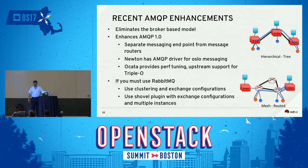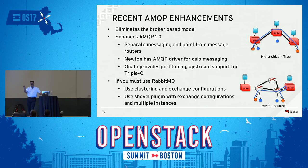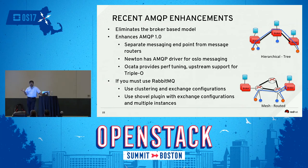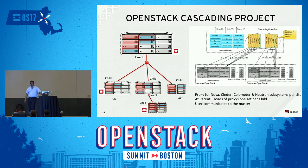Recent AMQP enhancements eliminate the broker model, where messages traveled broker-to-broker before reaching agents. Instead, a mesh router model routes messages directly to endpoints; brokers are only used between domains. This reduces latency and re-queuing overhead. A new direct AMQP driver is available in Newton for Oslo messaging — consider using it. If you must use RabbitMQ, tune it aggressively: use exchanges, shovel plugins, split into multiple queues, and scale as large as possible.